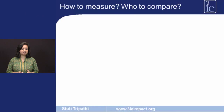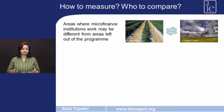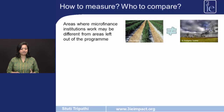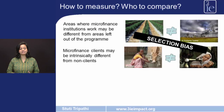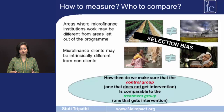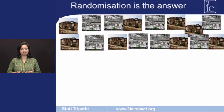This brings us to the question of how do we measure these changes and who do we compare? One answer is to compare people who have access to microfinance with those who do not. However, such a comparison is not likely to yield accurate results, mostly because areas where microfinance institutions operate may be intrinsically different from areas where they do not, and microfinance clients may be intrinsically different from people who do not choose to participate. We call this the selection bias. Hence, how do we get a treatment group and a control group which are comparable? Randomization is the answer.